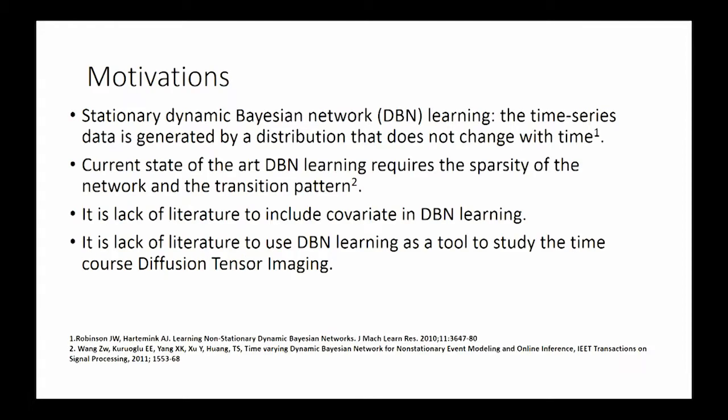So first, why we want to develop such a complicated model? Dynamic Bayesian networks are very useful to study the mechanism, the change of the mechanism of a system over time. But most of the studies in the literature focus on stationary dynamic Bayesian network systems. That means they assume that the time series data is generated by a distribution that does not change over time.